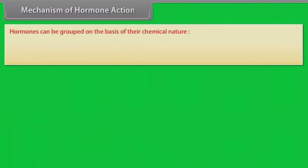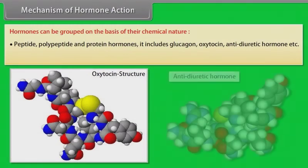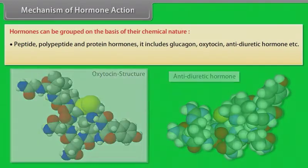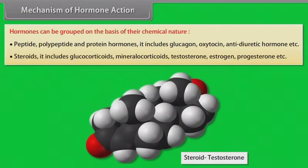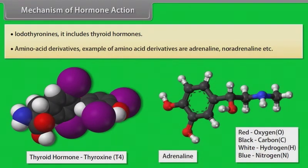Hormones can be grouped on the basis of their chemical nature. Peptide, polypeptide and protein hormones include glucagon, oxytocin, anti-diuretic hormone, etc. Steroids include glucocorticoids, mineralocorticoids, testosterone, estrogen, progesterone, etc. Iodothyronines include thyroid hormones. Amino acid derivatives include adrenaline, noradrenaline, etc.